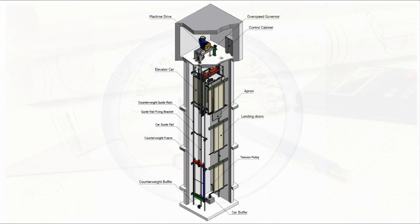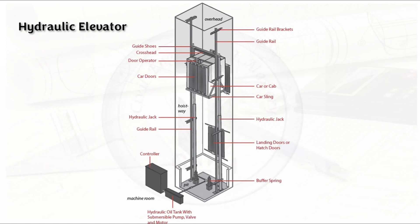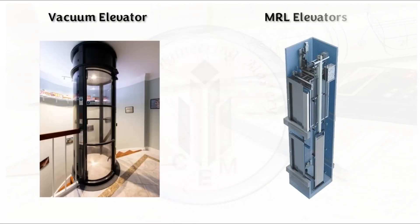Let's look into the types of elevators. Based on function, we have passenger elevator, goods elevator, and service elevator. Based on working mechanism, we have traction elevator — which has a lift machine room, lift car, and lift pit — hydraulic elevator, vacuum elevator, and MRL elevator. MRL elevator is a machine room-less elevator, so in this type there is no lift machine room; the unit needs to be accessed from the top of the elevated cab.